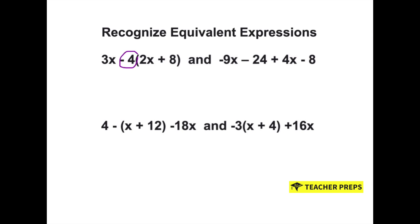We have to first distribute this negative 4 through. So we have negative 4 times 2, which is negative 8x, and negative 4 times 8, which is negative 32. We also have this 3x to bring down.